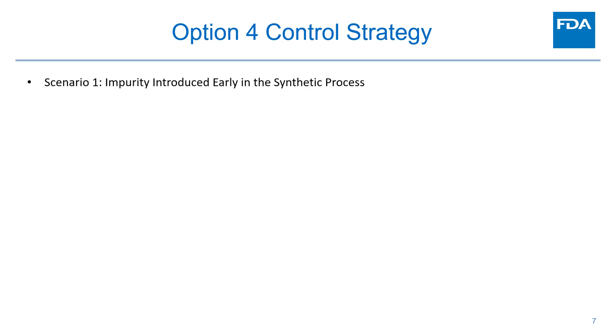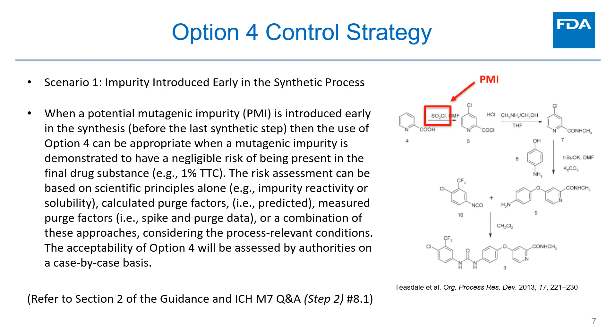When is it appropriate to use an Option IV control strategy? The appropriate use of Option IV depends on when the potential mutagenic impurity is introduced or generated in the synthesis. In the first scenario, when a PMI is introduced early in the synthesis before the last synthetic step, the use of Option IV can be appropriate when a mutagenic impurity is demonstrated to have a negligible risk of being present in the final drug substance — i.e., less than or equal to 1% TTC. The risk assessment can be based on scientific principles alone, calculated purge factors, measured purge factors, or a combination of these approaches considering process-relevant conditions. The acceptability of the Option IV strategy will be assessed by authorities on a case-by-case basis.